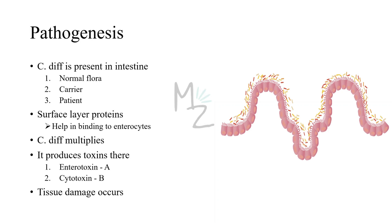Pathogenesis: Clostridium difficile can be present in the intestine in three conditions — as part of normal flora, as a carrier state in a person who recovered from disease or has asymptomatic infection, or in a patient actively suffering from infection.